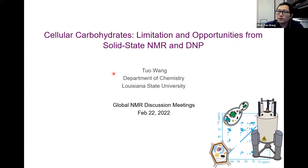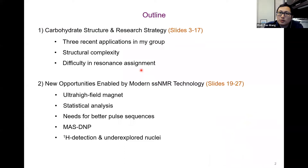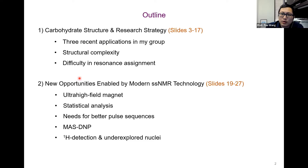We will have two sections. In the first section, I will give a very brief introduction of three recent applications in my group, followed by a focused discussion of the structural complexity of carbohydrates and the resulting difficulty in resonance assignment. In the second section, I will discuss new opportunities enabled by ultra-high-field magnets, statistical tools, pulse sequences, magic angle spinning, dynamic nuclear polarization, and proton detection and other under-explored nuclei.